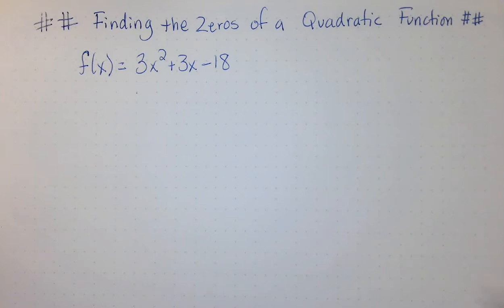Today, we're finding the zeros of a quadratic function. Our function is f of x equals 3x squared plus 3x minus 18.